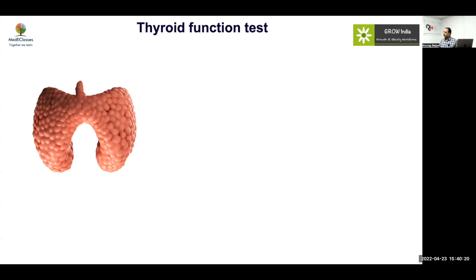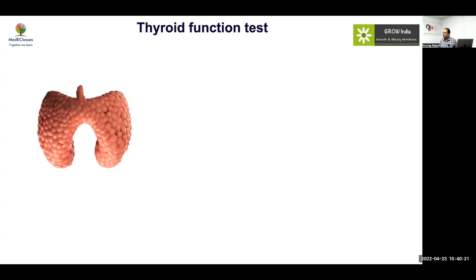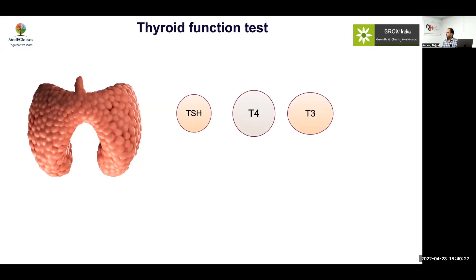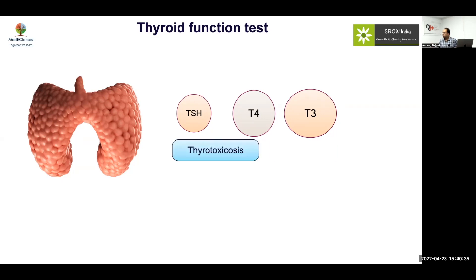In cases of thyrotoxicosis, the TSH will be the first to go down, and T4 will rise, but the rise of T3 will be much more. So if you just do FT4 and TSH, you may still be confused. In this scenario, you should do T3, FT4, and TSH. Why T3 total and not FT3? Most assays of FT3 actually use a surrogate marker and are not very reliable, so total T3 is what is recommended.